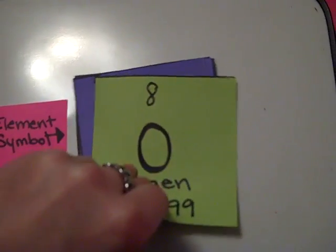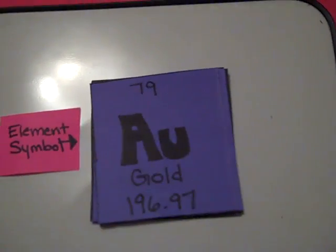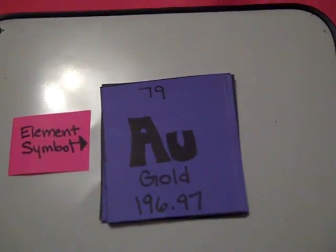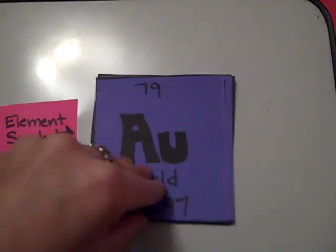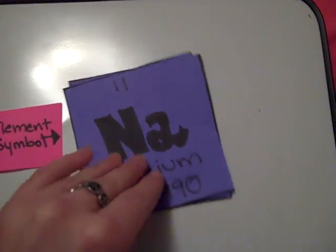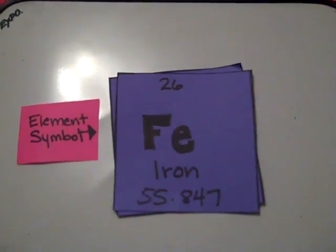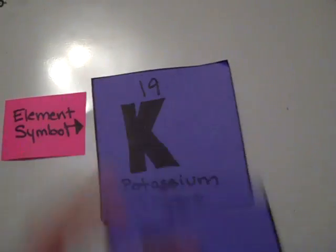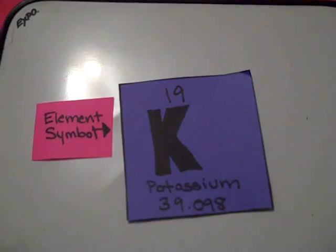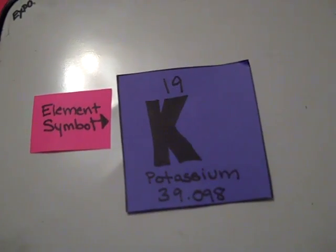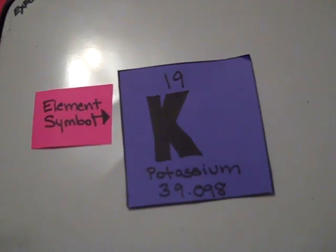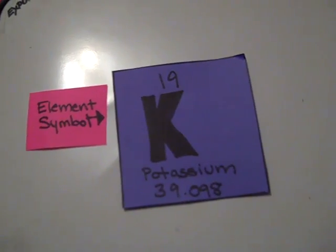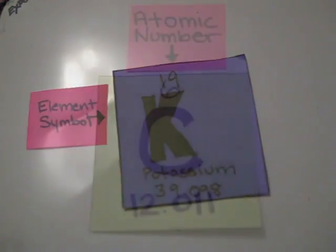But others are harder to understand: Au for gold, Na for sodium, Fe for iron, and K for potassium. These pretty much just have to be memorized.